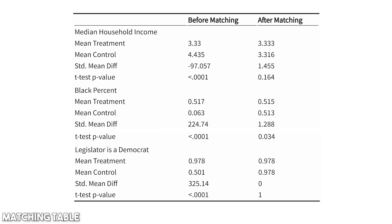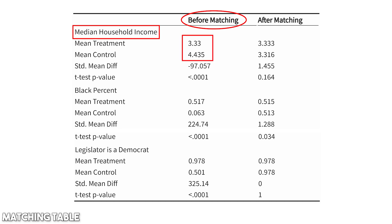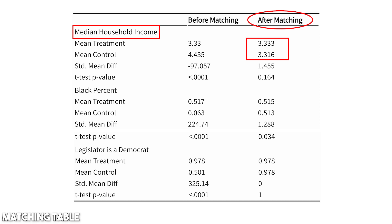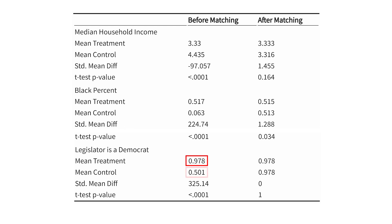Here's an example of a balance table from the Brookman study, looking at mean household income, percentage of people Black in the district, and whether the legislator is a Democrat — both before and after matching. Before matching, median household income was quite different: higher in areas with white legislators. But after matching, it found sets of white-legislator areas with similar household incomes to Black-legislator areas — the difference narrowed from 3.33 vs. 4.435 to 3.33 vs. 3.316. For the Democrat variable, it matched perfectly: 97.8% of Black legislators were Democrats, and after matching, 97.8% of the non-Black comparison group were too.